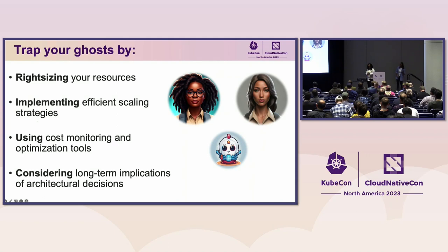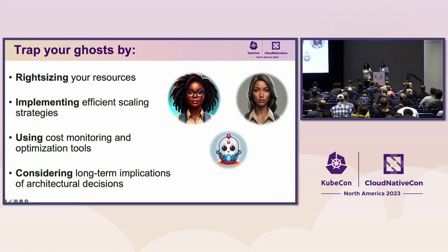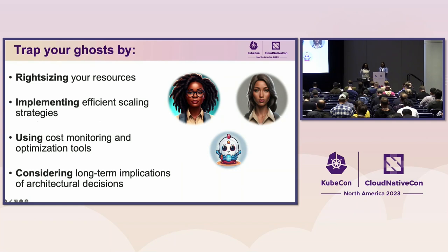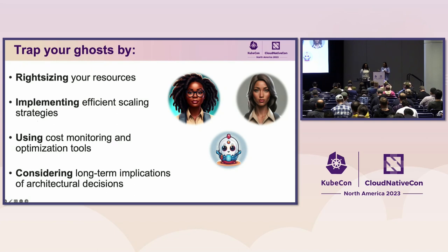To recap: we covered tactical tips, hidden costs, and obvious costs. Now, how do you actually trap those costs? Right-size your resources — your pods and your cluster. Use the appropriate tooling and leverage automation as much as you can. Implement scaling using things like Cluster Autoscaler, Karpenter, or KEDA. Monitor continuously and use the right optimization tools. Once you've gathered data and learned lessons, apply those findings when creating new clusters and building new platform strategies. And remember — once you trap your ghosts, it's not over. They can come back to haunt you, so keep up with your ghost-hunting activities.